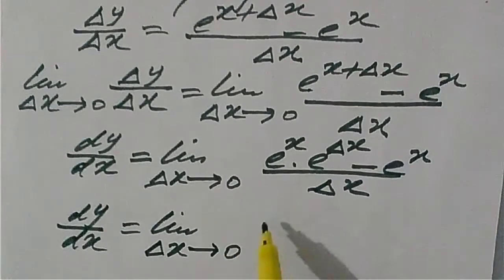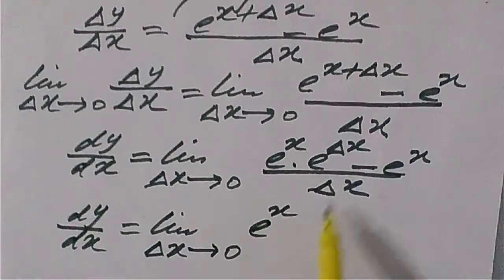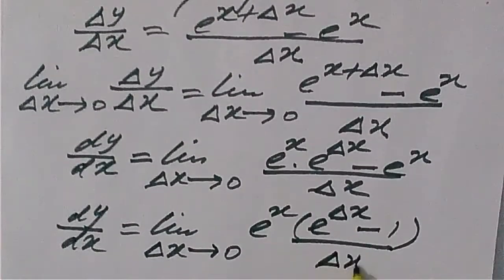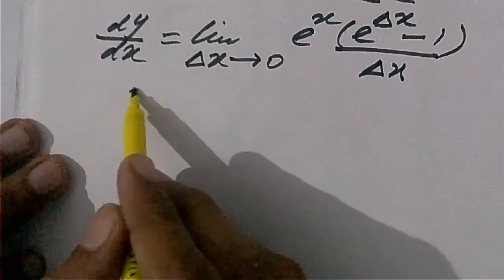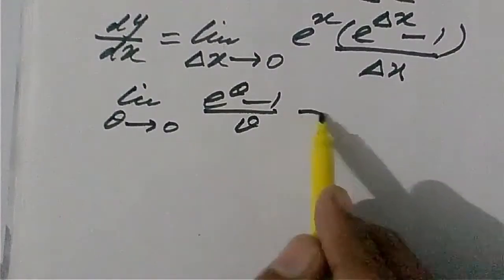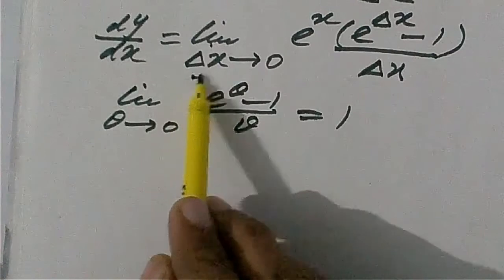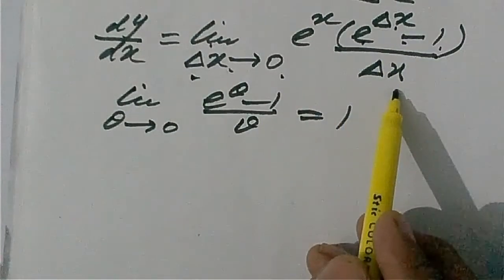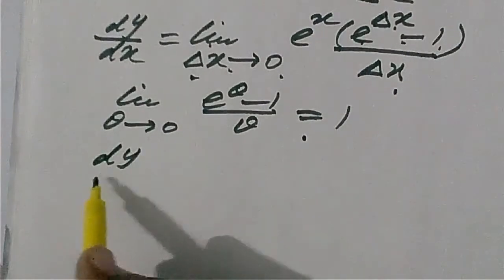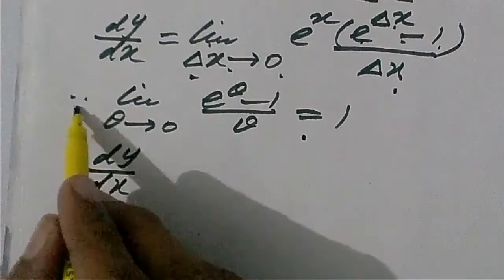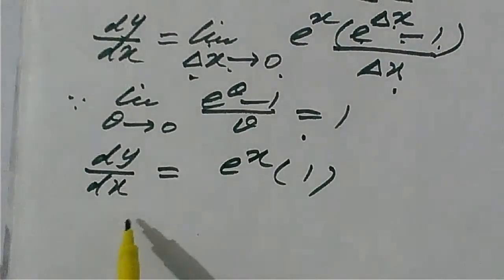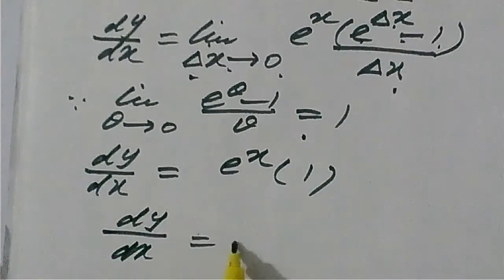Taking e raised to the power x common from the two terms, we have dy upon dx equal to e raised to the power x into the limit as delta x tends to 0 of e raised to the power delta x minus 1 upon delta x. This is a standard limit — limit theta tends to 0 of e raised to the power theta minus 1 upon theta equals 1. So the standard limit equals 1, and ultimately dy upon dx is equal to e raised to the power x.